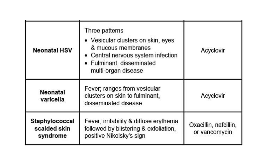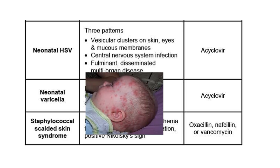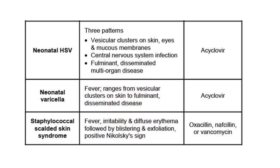Next is neonatal varicella. It presents with fever and ranges from vesicular clusters on the skin to fulminant disseminated disease. As we can see in the diagram, it also presents as vesicles, and the treatment is acyclovir.